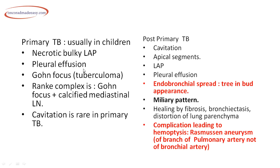Primary TB is seen in young children and is accompanied by necrotic bulky lymphadenopathy, pleural effusion, a Ghon focus or tuberculoma, and Ranke complex — that is Ghon focus with calcified mediastinal lymph nodes. Cavitation is rare in primary TB. In post-primary TB, cavitation is very common and more commonly seen in the apical segments; lymphadenopathy and pleural effusion are also seen.